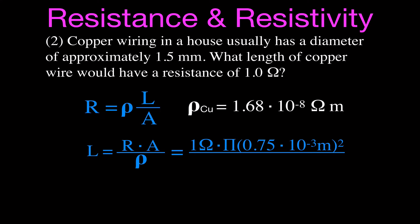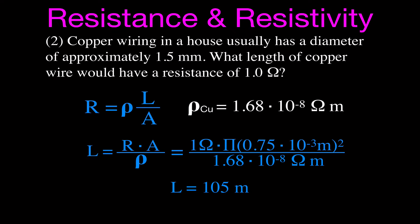The diameter is 1.5 millimeters, so the radius is half: 0.75 times 10 to the minus 3 meters. The resistance is 1 ohm, the area is pi r squared with radius 0.75×10⁻³ meters — remember to square — divided by the resistivity of copper, 1.68×10⁻⁸ ohm·meters. That gives a length of about 105 meters. The ohms cancel, meters squared on top and one meter on the bottom leaves meters.